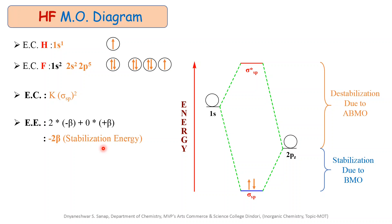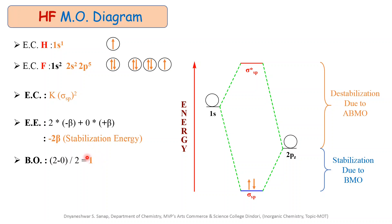The next important point is the calculation of bond order for the HF molecule. The bond order is calculated using the formula: number of electrons in the bonding molecular orbital minus the number of electrons in the antibonding molecular orbital, divided by 2. Substituting the values, we get (2 − 0) / 2 = 1. This indicates that there is one bond formed between the hydrogen and fluorine atoms when they combine according to the LCAO principle. According to the energy and bond order, the molecule is formed easily.